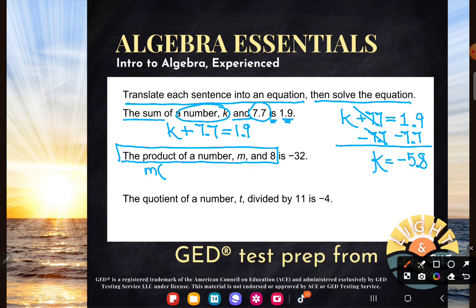it actually doesn't necessarily mean multiplication. So the better way to write that, remember, when we're multiplying together a number and a letter is to write the number first. We call that the coefficient. And then the letter or the variable second. And that's how we usually do multiplication with variables. So there's the product of a number M and 8.